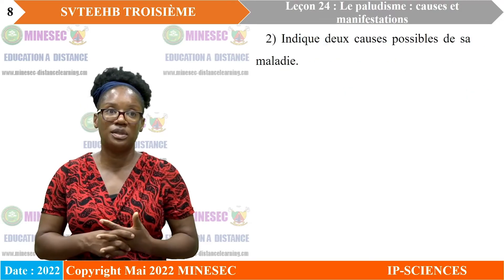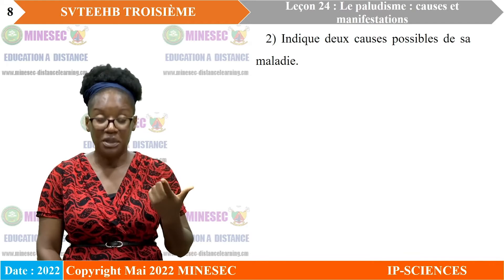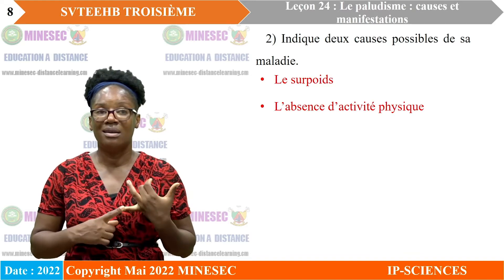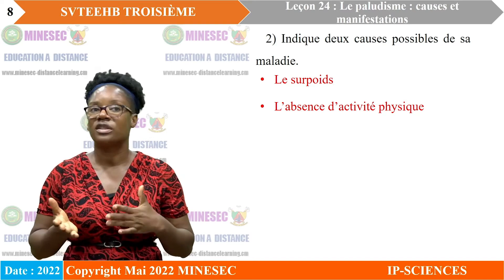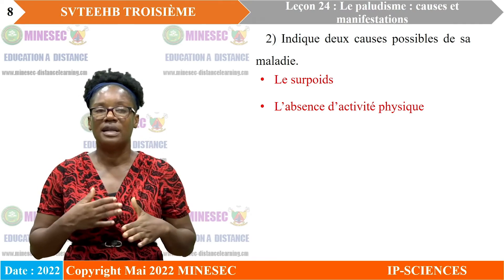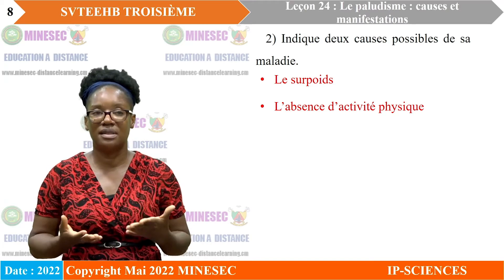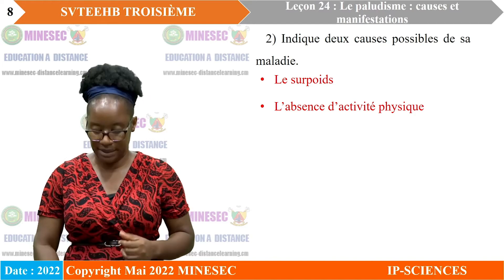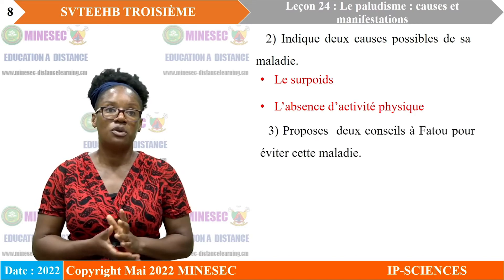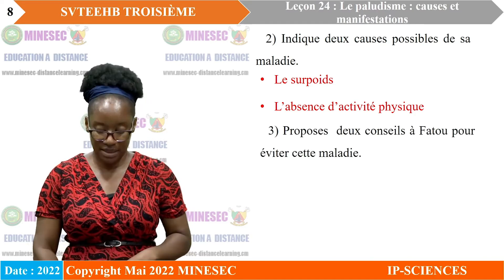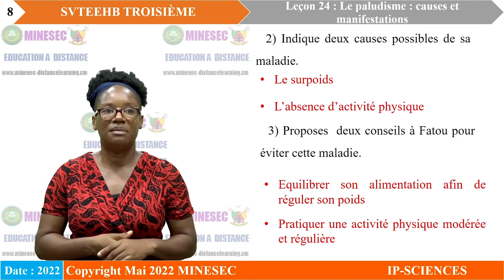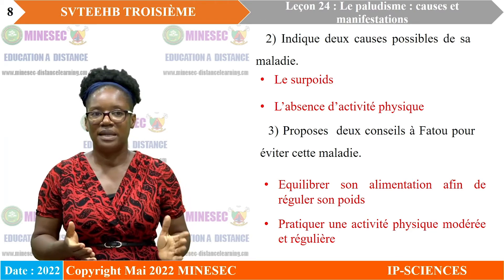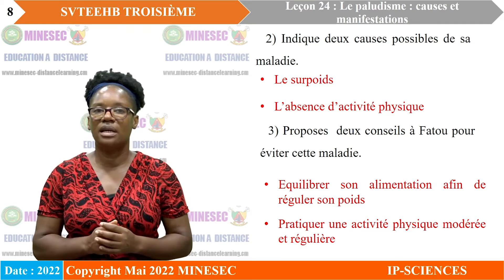Deuxième question : indiquez deux causes possibles de sa maladie. Patou mesure 1,60 m pour 88 kg, ce qui signifie qu'elle est en surpoids. De plus, elle ne pratique aucune activité physique. Ces deux éléments peuvent être les causes probables de sa maladie. Proposition de deux conseils : équilibrer son alimentation afin de réduire son poids, et pratiquer une activité physique modérée et régulière.